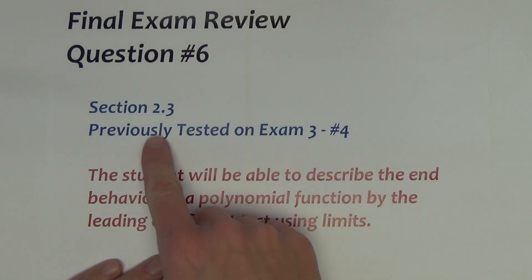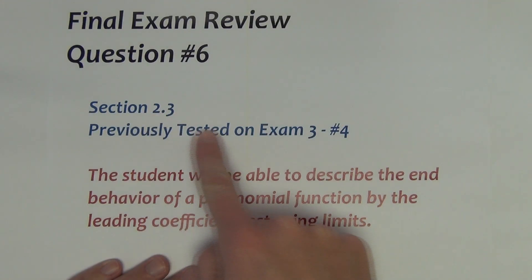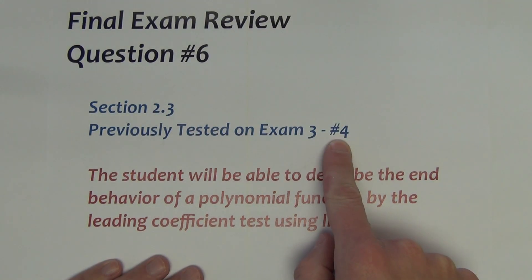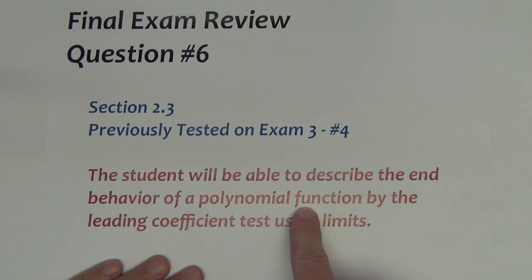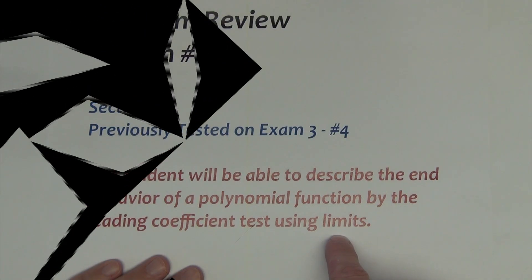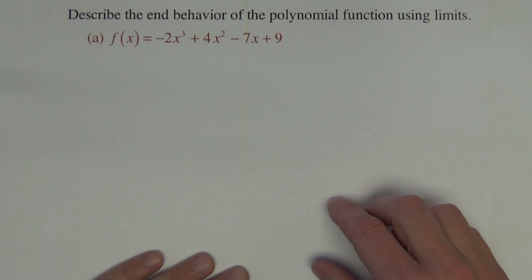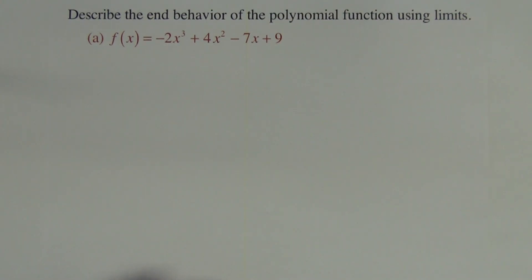Question 6 on the final exam comes from section 2.3, previously tested on exam 3 number 4. A student will be able to describe the end behavior of polynomial functions by leading coefficient tests using limits. The first question says, describe the end behavior of the polynomial function using limits.